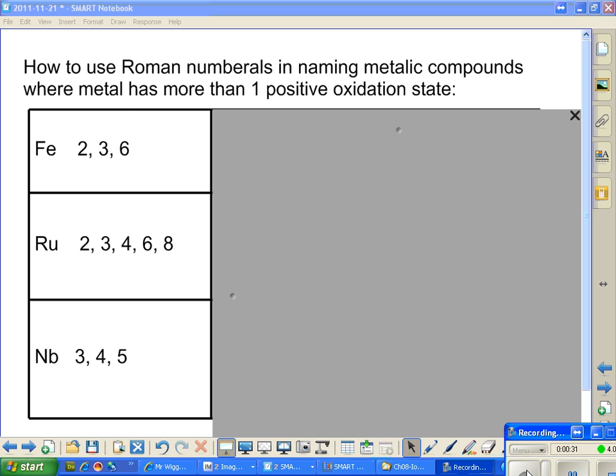I took three examples. These guys are normally going to be found in the transition metals, and transition metals would include the iron and ruthenium and niobium. Those are the three guys that I chose because they had lots of different charges, and so I can give you several examples for each and help you understand how this works.